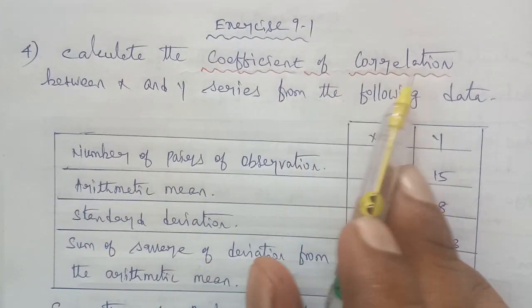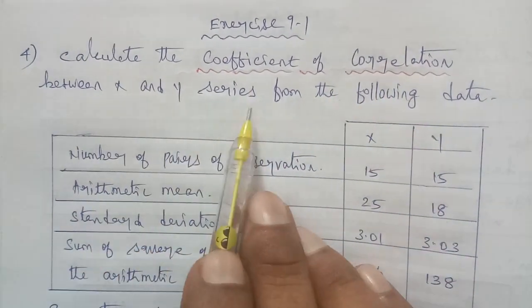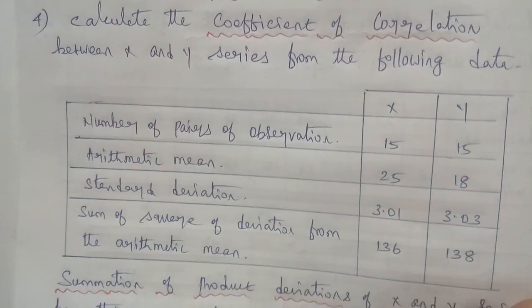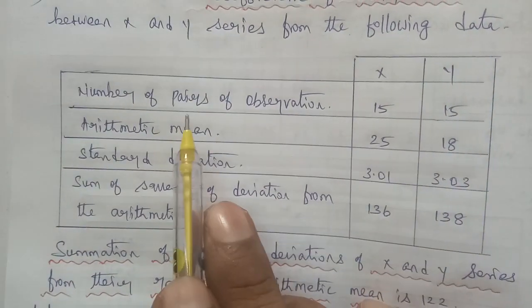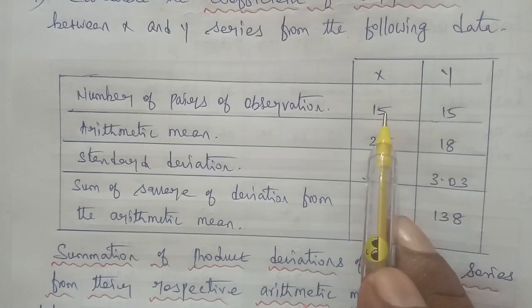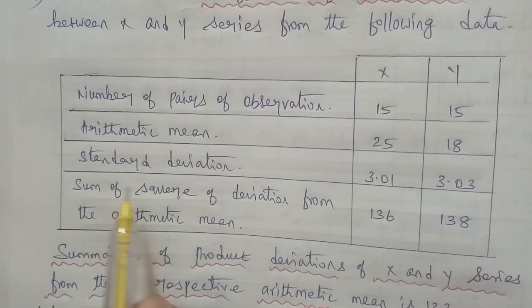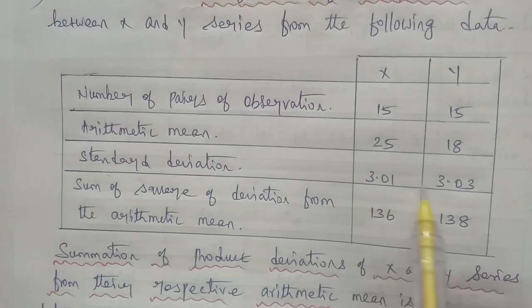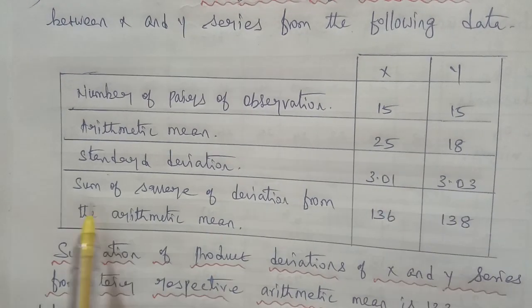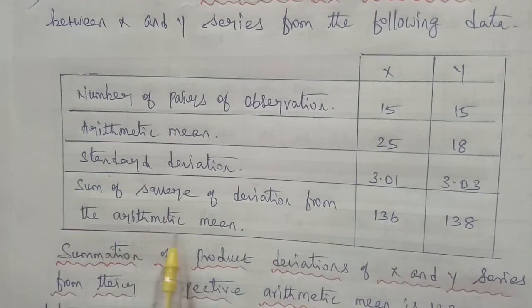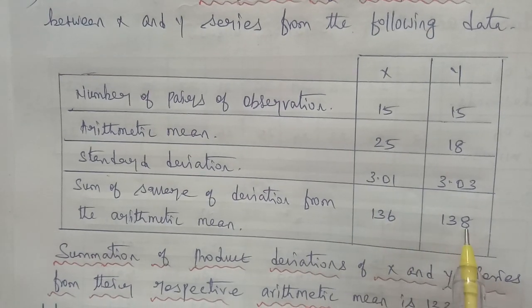Calculate the coefficient of correlation between X and Y series from the following data. The question data: Number of pairs of observation 15, 15, arithmetic mean 25, 18, standard deviation 3.01, 3.03.